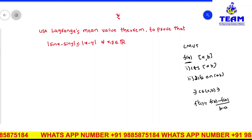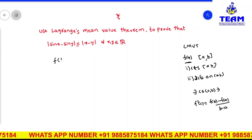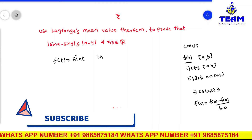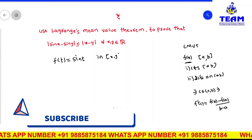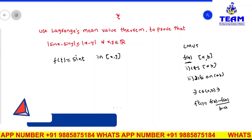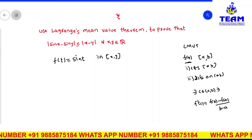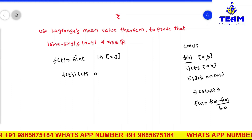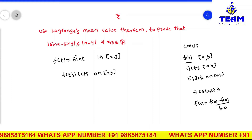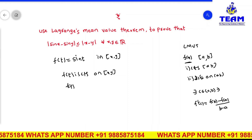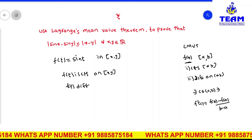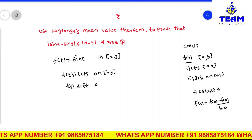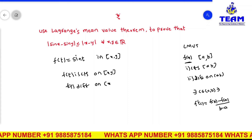To prove this inequality, we consider f of t is equal to sin t on the interval x comma y. We know that the sine function is a trigonometric function which is continuous. So f of t is continuous on the closed interval x comma y, and f of t is also differentiable — the derivative of sin t is cos t, which also exists on the open interval x comma y.